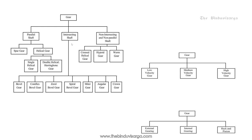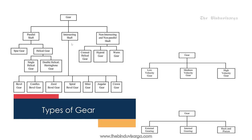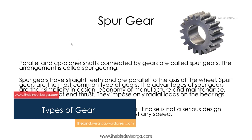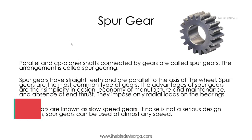With respect to speed, gears can also be classified as low velocity gear, medium velocity gear, and high velocity gear. Gears can also be classified as external gearing, internal gearing, and rack and pinion.